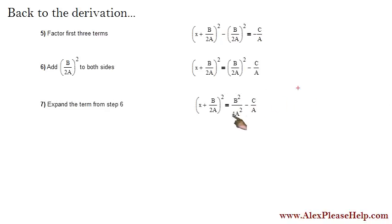Expand that term, the b over 2a squared. It becomes b squared over 4a squared, because you have to square the 2. You can't forget to square the 2. A lot of students forget to do that. You also have to square the a. Everything inside there is being squared, or multiplied by itself rather.